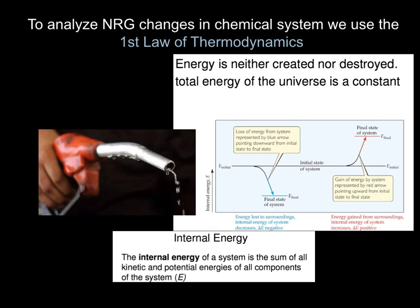When we're analyzing how the surroundings and system are changing in energy, we have to use the first law of thermodynamics, which says that energy is neither created nor destroyed. In fact, the total energy of the universe is a constant. The energy present during the Big Bang is still the energy present today, meaning energy has been transformed and converted in different ways, but it's the same amount. The energy of the system is called the internal energy - the sum of all kinetic and potential energies in the system.